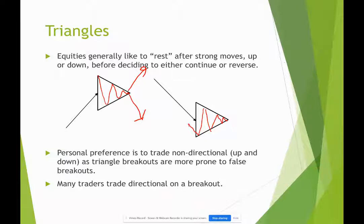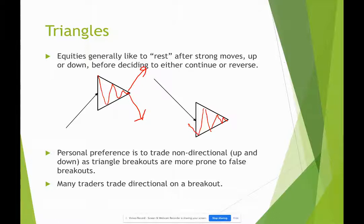Now there are many traders that trade directionally on breakouts. My personal preference is to trade non-directional. I've got my own reasons because of my own style, but it is perfectly valid to trade triangles directionally on a breakout. I personally don't do that too much because they tend to be more prone to false breakouts, and I'm not able to control it because I am not awake during market open, since I live on a little island in the Ottoman Sea just off the coast of Malaysia.